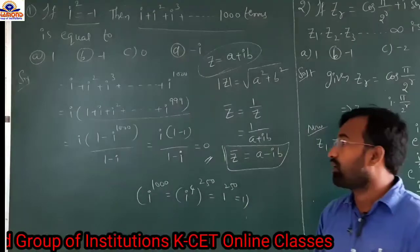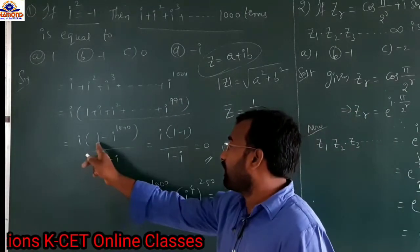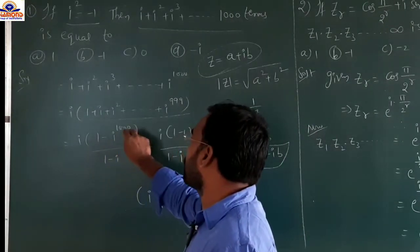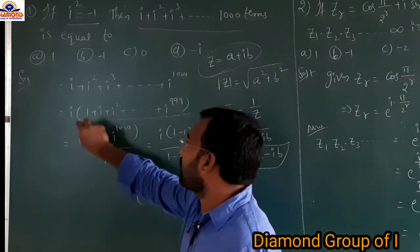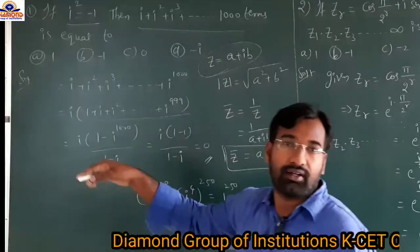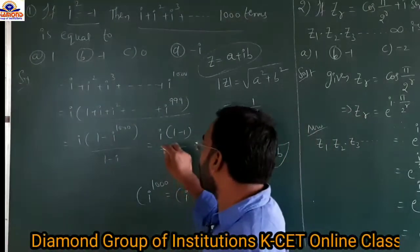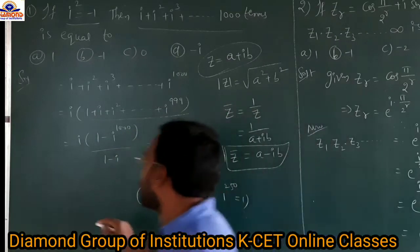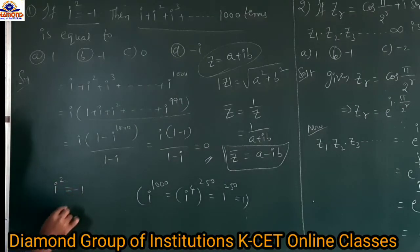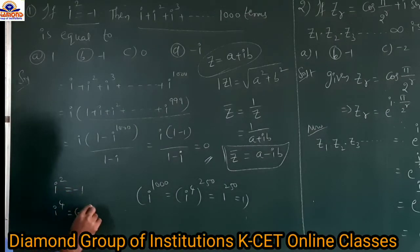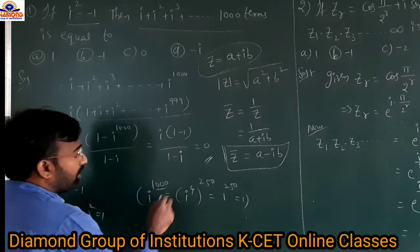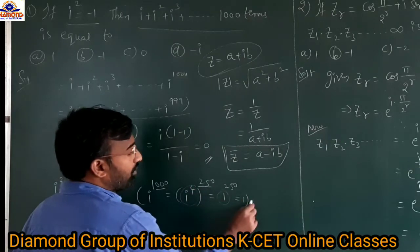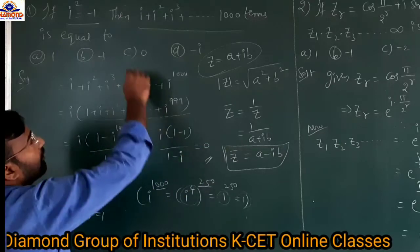...which is in GP. So what is the GP formula? It's a times (1 minus r^n) by (1 minus r). So i times (1 minus i^1000) by (1 minus i). Here a is 1, the first term, and r is the second term by first term, equal to i. Now i^1000 equals 1 because i² equals minus 1, so i⁴ equals (minus 1)² equals 1. So i^1000 can be written as (i⁴)^250, and i⁴ equals 1, so 1^250 equals 1. That's why 1 minus 1 is 0. So the answer is c.